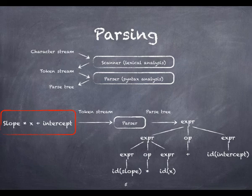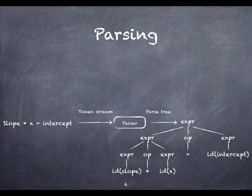In this example, the parser is organizing the expression slope times x plus intercept, which consists of the tokens slope, the multiplication symbol, x, the addition symbol, and intercept into a corresponding parse tree.